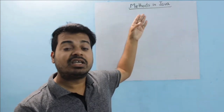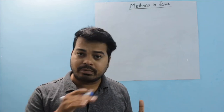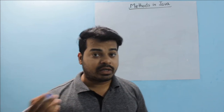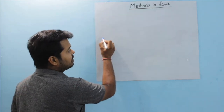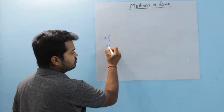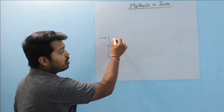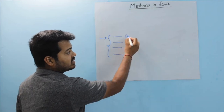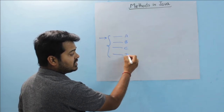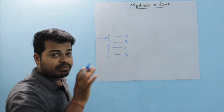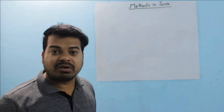A method is nothing but a block of statements which will get executed whenever it is called. Let's say this is your method — it's a block of statements A, B, C, and D. It gets executed whenever it is called. That's the simple definition of a method.